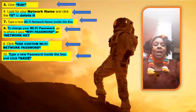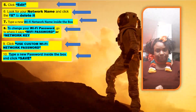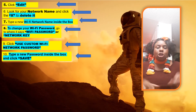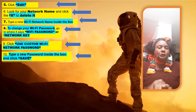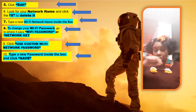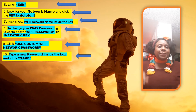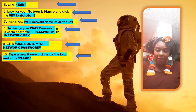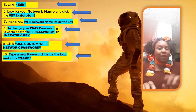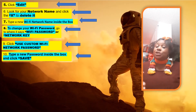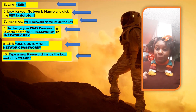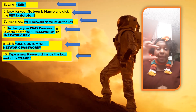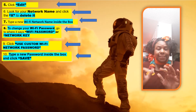Step five: you're going to click on edit. Step six: look for your network name and click the X to delete it. Step seven: type in a new Wi-Fi network name inside the box — whatever you want, this is your chance to make up your own Wi-Fi network name.